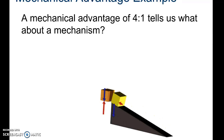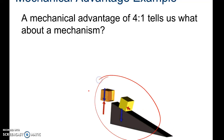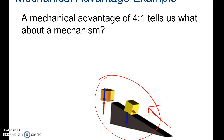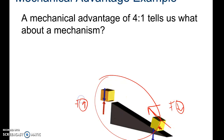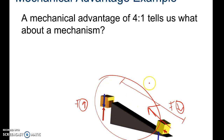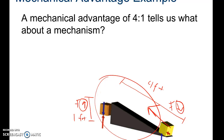A mechanical advantage of four to one tells us that we're able to magnify the amount of force we're able to lift or push or pull compared to the effort force. In this particular case, we've been able to reduce the amount of effort force by manipulating the distance. The amount of force it takes to push the box is lower on the ramp than in the other scenario, because the distance when pushing it up the ramp is four feet compared to lifting the box, which is one foot.